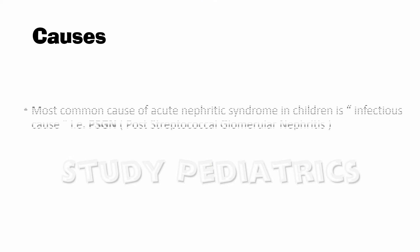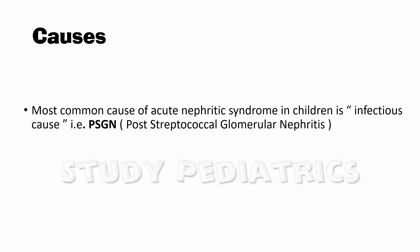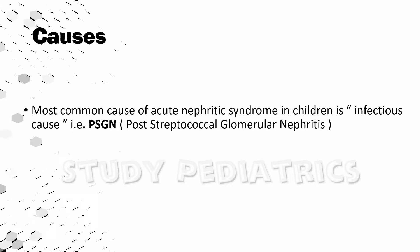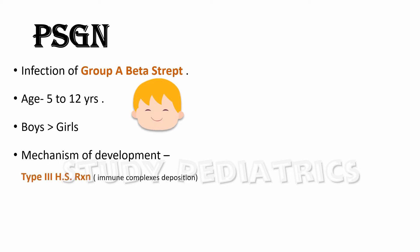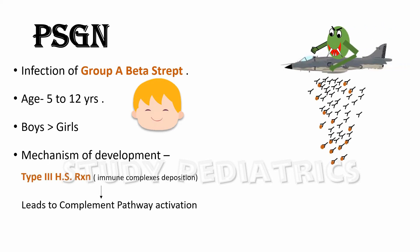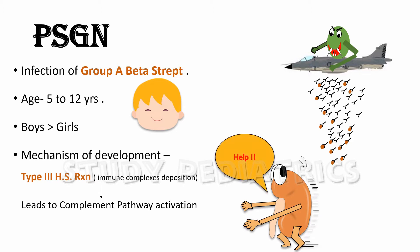The most common cause of acute nephritic syndrome in children is an infectious cause, specifically PSGN. PSGN occurs due to infection caused by Group A beta streptococci, involving the age group of 5 to 12 years, with boys affected more than girls. The mechanism is based on type 3 hypersensitivity reaction involving immune complex deposition, followed by complement system activation leading to inflammatory response and glomerular damage.